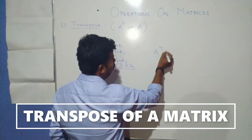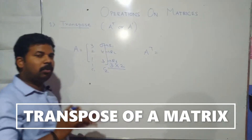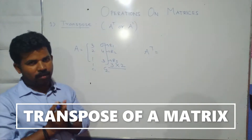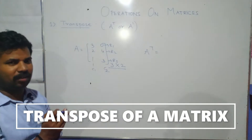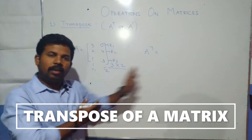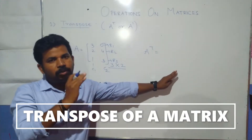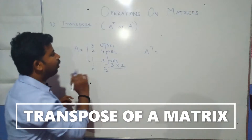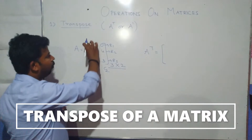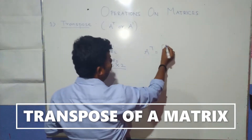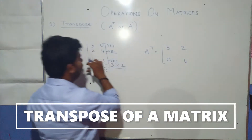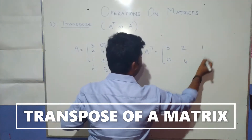Now if we do the transpose of this matrix — A power T — what is the transpose? Transpose of a matrix is obtained by interchanging rows into columns. That means here if it is a row, it must become a column, and if it is a column it should become a row. What I will do is change the first row into the first column: three, zero. Second row into second column: two, four. Third row as third column: one, three.